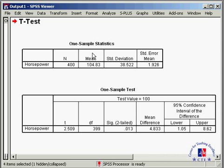The mean horsepower in our sample is 104.83. SPSS uses the standard deviation of our sample, in our case 38.522, to estimate a standard error. In our case, that's 1.926.